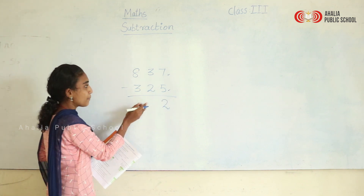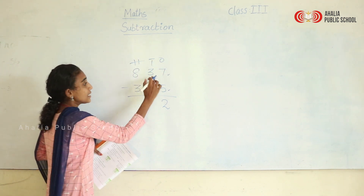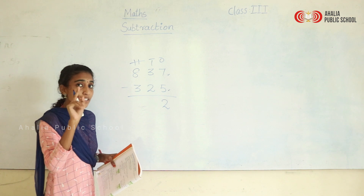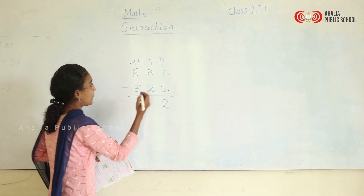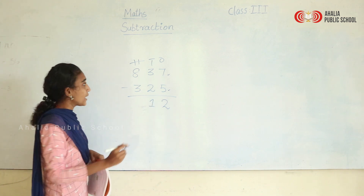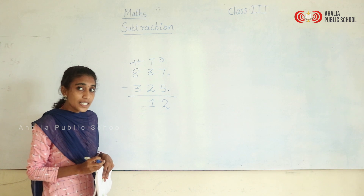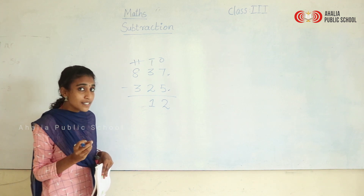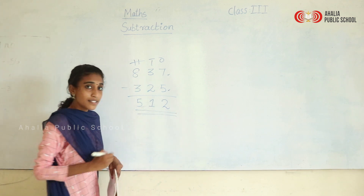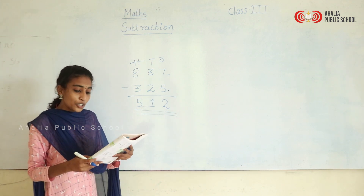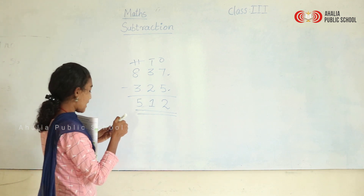Coming to the tens place: 3 minus 2 — what is 3 minus 2? It is 1. And now 8 minus 3 — what is 8 minus 3? It is 5. So here we got the answer: 512.